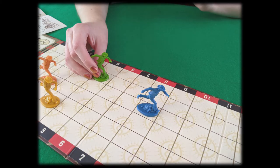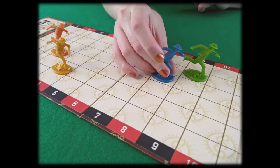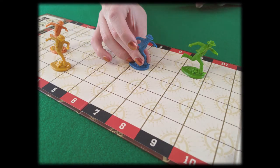Players move their cowboys forward by scoring points and move their opponent's cowboys backwards by playing hazard cards against them.